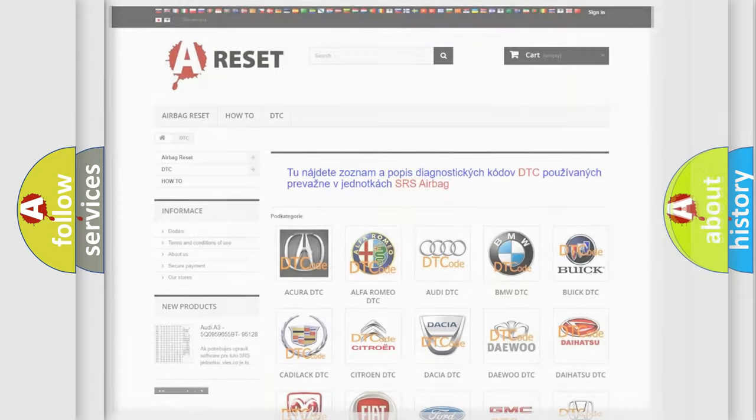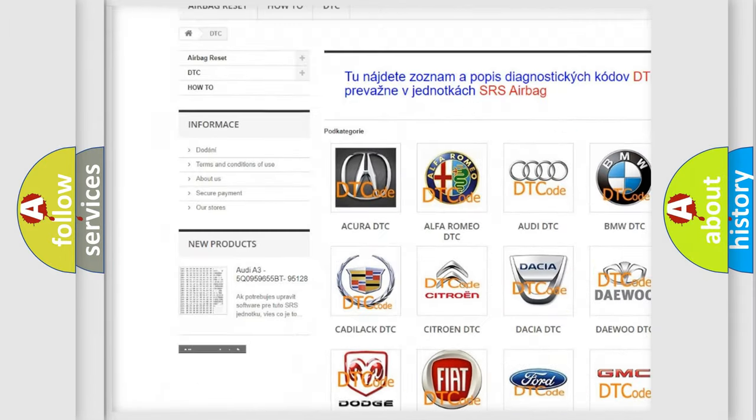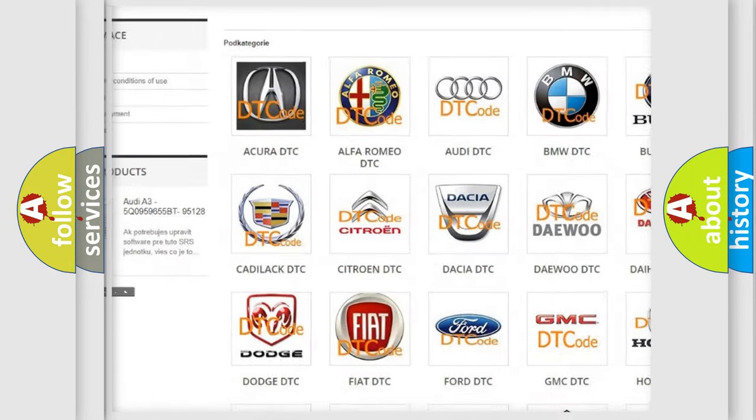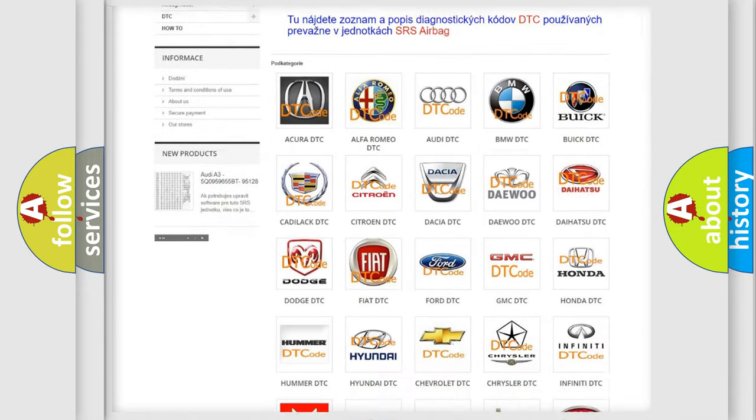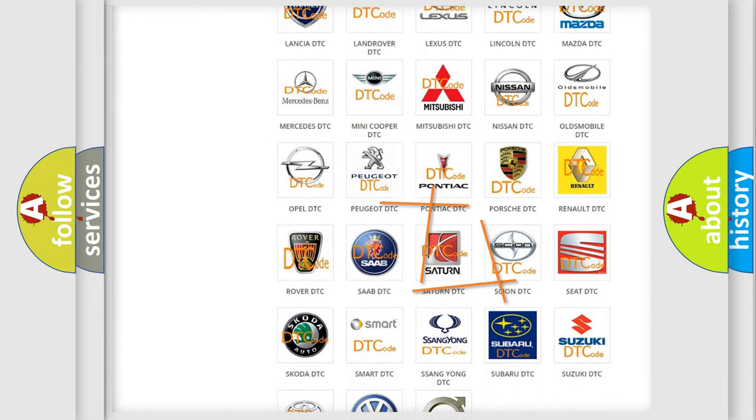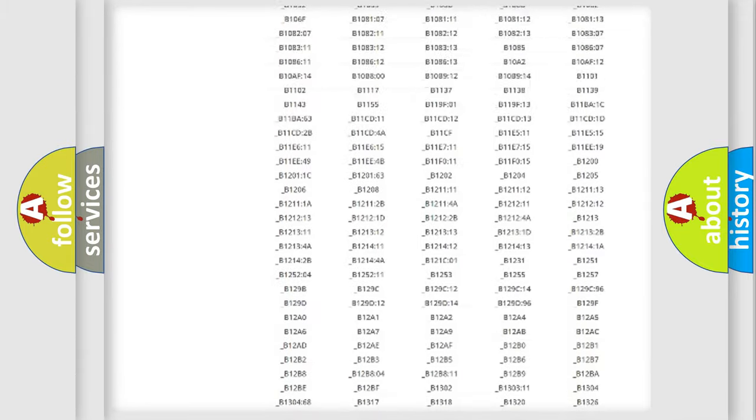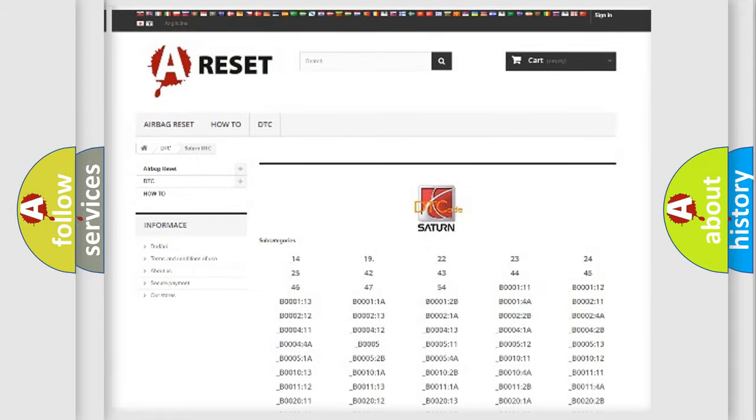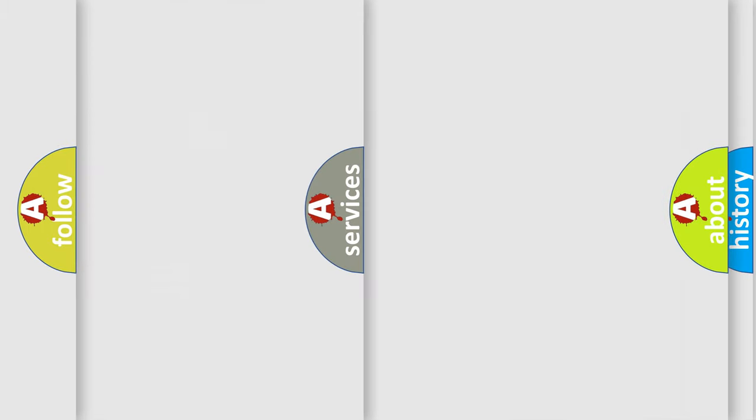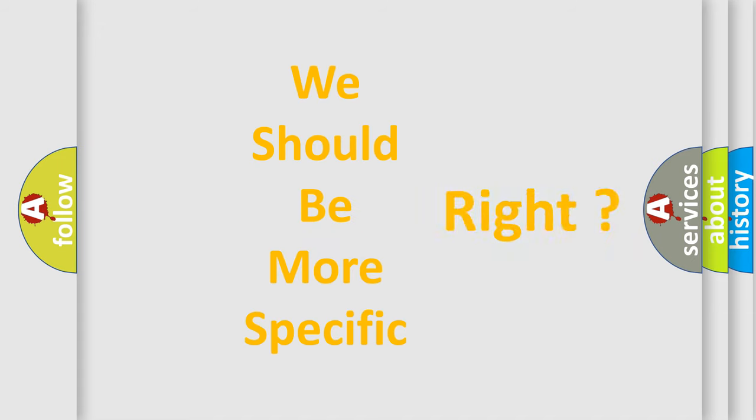Our website airbagreset.sk produces useful videos for you. You do not have to go through the OBD2 protocol anymore to know how to troubleshoot any car breakdown. You will find all the diagnostic codes that can be diagnosed in Saturn vehicles, also many other useful things. The following demonstration will help you look into the world of software for car control units.